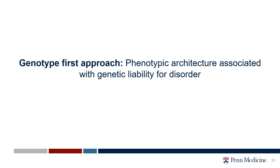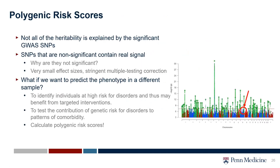Now moving to the genotype-first approach — trying to uncover the phenotypic architecture associated with genetic liability for disorders, starting with the genome and going to the phenotype. This is where polygenic risk scores come in. The reason we use polygenic risk scores is because each SNP identified as associated with the phenotype has a really small effect. Polygenic risk scores allow us to aggregate the effect of all the SNPs that give an individual risk for a disorder into a single score, predicting their genetic liability for that disorder.